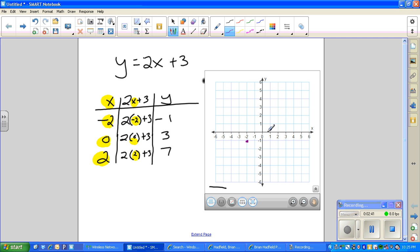And then 0, 3. So 0 movement on the x-axis, up to 3 on the y-axis. And then 2, 7. 2 over on the x, up to 7. Which on this one goes a little off the grid here. Right there.